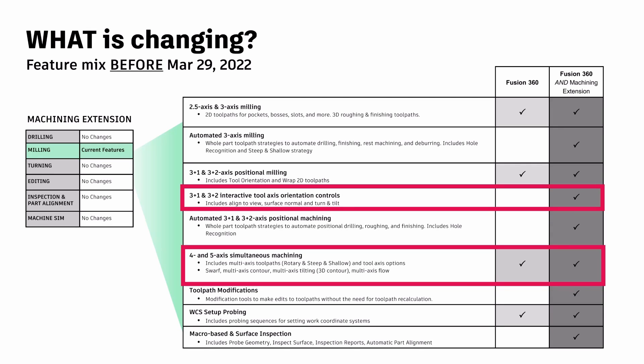Alright, so if you are currently using the base version of Fusion 360, these are some of the changes that will be directly affecting you. Prior to March 29th, which is when Autodesk will be going live with these changes, you still have access to Fusion 360's 4 and 5-axis simultaneous machining toolpaths.